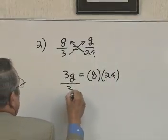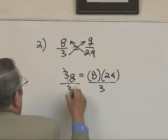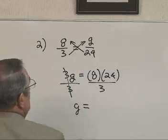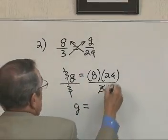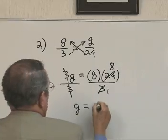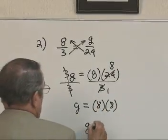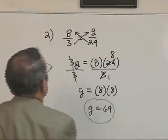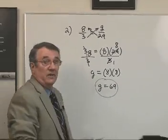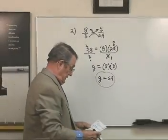Opposite of multiplication is division, treating both sides alike. So g is equal to 3 goes into that once, goes into that 8 times, it's equal to 8 times 8. So g is equal to 64. We won't check that, but if we did I can tell you it's correct.